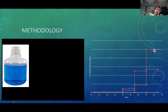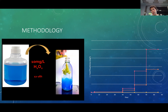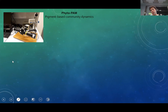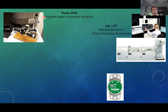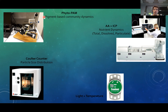To quantify recovery from perturbations, we applied perturbations to the system. Basically, we removed a part of the water from the carboy to a separate container. That container was treated with 10 milligrams per liter of hydrogen peroxide overnight before being brought back to the original system. The effect of the perturbation was quantified on an every-other-day basis using phytopump for pigment-based community dynamics. We also followed nutrient dynamics, controlled physical-chemical parameters such as light and temperature, and measured particle size distribution.